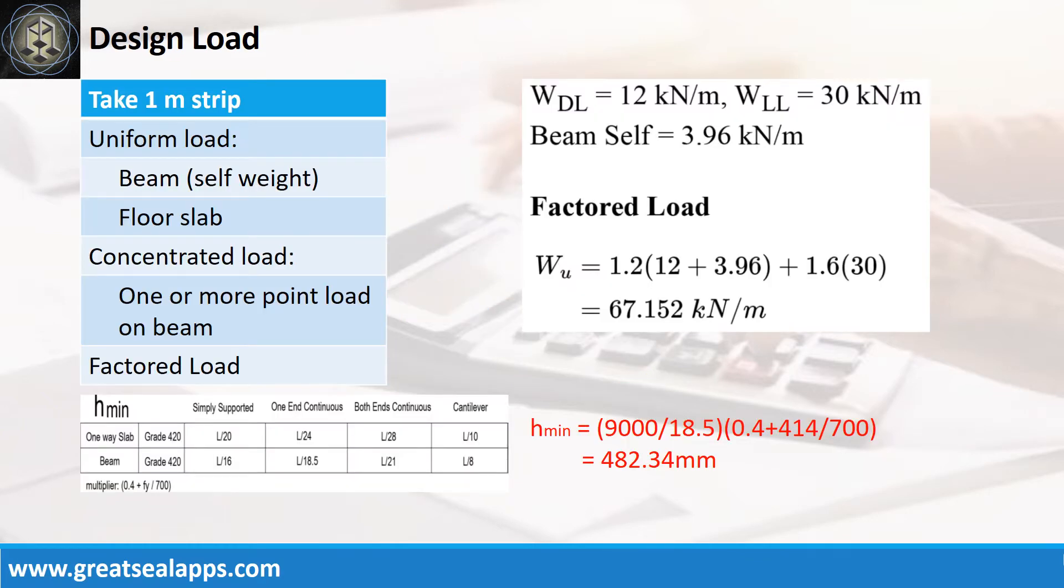The beam carries a uniform dead load of 12 kN per meter and uniform live load of 30 kN per meter. The beam's self-weight is 3.96 kN per meter for a factored load of 67.152 kN per meter.